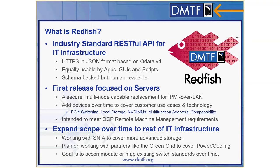Redfish now includes a richer set of inventory within systems, including memory and the new NVDIMMs, which are becoming very popular. The forum is also working on multi-function adapters and even tackling more complicated concepts like system composability. This first release was intended to meet the needs of the Open Compute Project's remote machine management specification, but over time we're expanding the scope of Redfish to fit more users and more use cases. We're working with partner organizations including SNIA, the Green Grid, and the Open Compute Project to further enrich the data model and expand its scope.